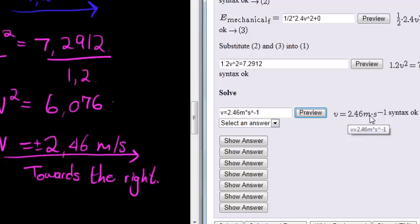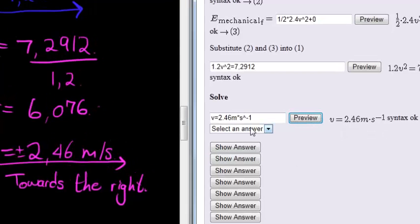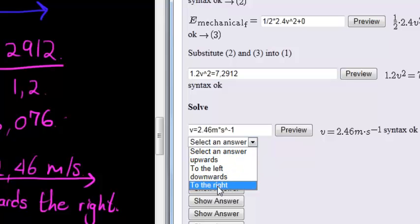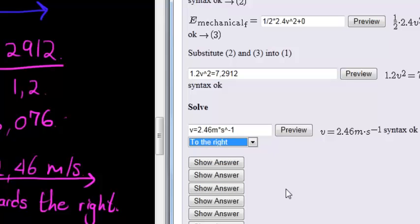There we go, 2.46 meters per second, and the answer, the direction in which it was traveling, was to the right.